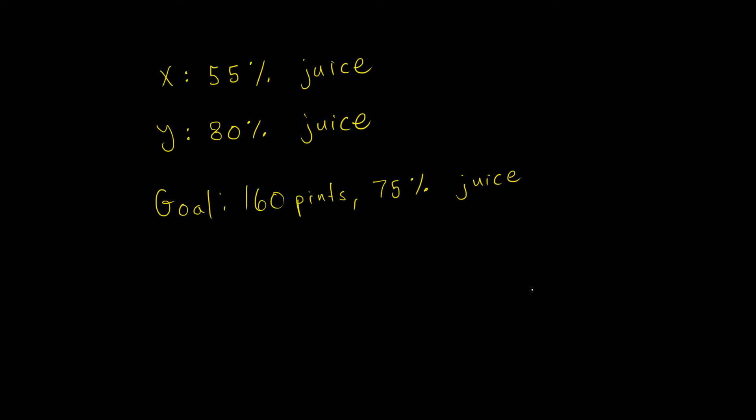So in this problem we're going to use an algebraic equation. The first thing we're going to do is figure out if juice type X is 55% juice, then how much of that is real juice. For example, 100 pints of juice X would have 55% or 55 pints of real juice. If I have 200, then it's going to be 110.